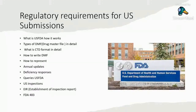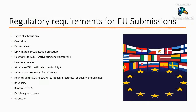Coming to the European countries, we will see what type of submission procedures are there — decentralized, centralized procedure, MRP. Then how to write the active substance master file, how to represent it, and what is the certificate of suitability and when we have to file it, including its validity and renewal period. We will also study deficiency responses and inspections related to certificate of suitability, all in depth for EU submissions.